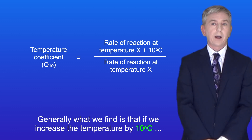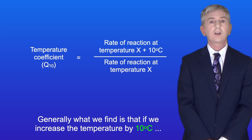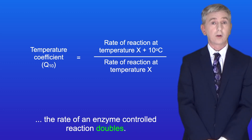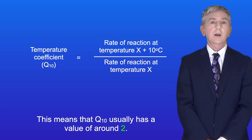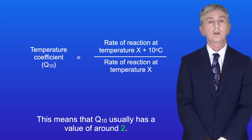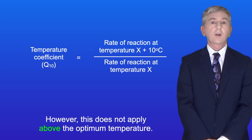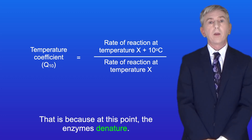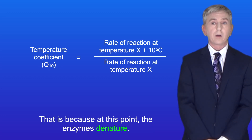Generally what we find is that if we increase the temperature by 10 degrees Celsius, the rate of an enzyme-controlled reaction doubles. This means that Q10 usually has a value of around 2. However, this does not apply above the optimum temperature, because at this point the enzymes denature.